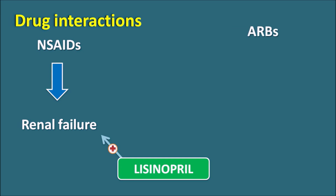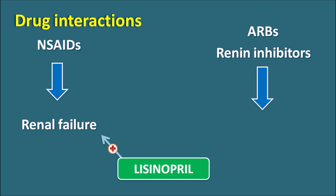Similarly, drugs acting on the renin-angiotensin system like ARBs (angiotensin 2 receptor blockers) and renin inhibitors like aliskiren all produce hypotension and are used as antihypertensives. Lisinopril also produces hypotension by inhibiting the renin-angiotensin system. When these drugs are combined, they can produce severe hypotension because all of them inhibit the renin-angiotensin system. That's why these drugs should be avoided with Lisinopril.